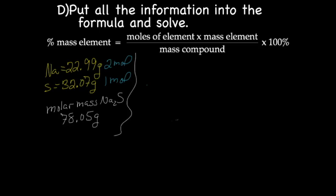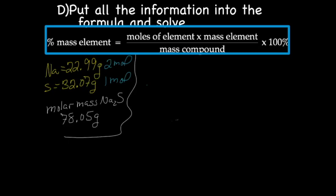And so now we take all of this information that we just figured out and stick it into this formula here. Okay, and we're trying to find out percent mass. So we've got percent mass equals moles of the element, and we do each element separately. So let's start with Na. So we have how many moles of Na? Two, because it's Na2, remember? So two moles times the mass, which we came up with 22.99, divided by the mass of the compound, molar mass of Na2S, and we got 78.05 multiplied by 100.